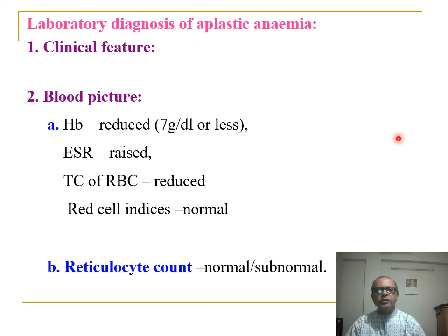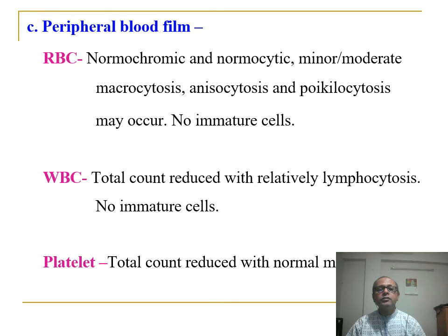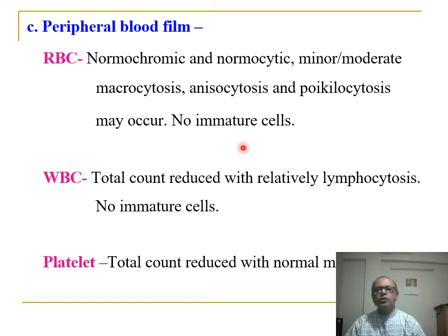Laboratory diagnosis of aplastic anemia — blood picture: hemoglobin is reduced (7 g or less), ESR is raised, total RBC count is reduced, red cell MCV is usually normal, and reticulocyte count is subnormal. Peripheral blood film shows normochromic cells with mild to moderate macrocytosis and anisocytosis, poikilocytosis, no nucleated red cells. Neutrophils are usually present with reduced total count and relative lymphocytosis. Platelets are reduced with normal morphology.